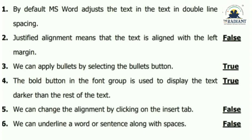Number eight: we can apply bullets by selecting the bullets button — it is true. When we put bullets at the beginning of a line we apply bullets from the Home tab. Number nine: the bold button in the font group is used to display the text darker than the rest of the text — it is also true. Bold makes the text a little bit darker than the regular text.